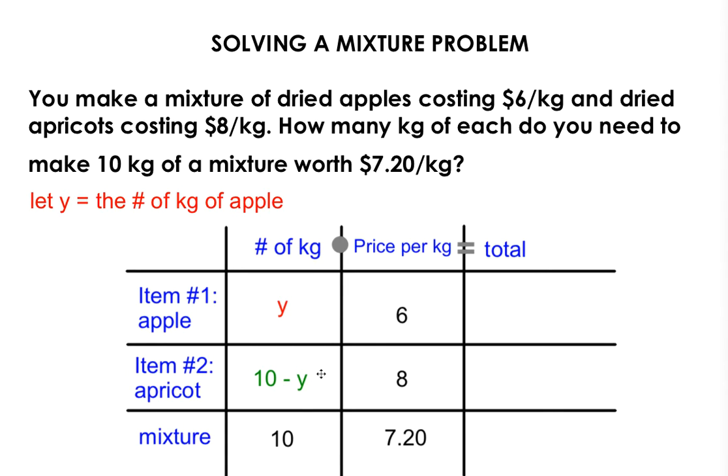Now that I have these two cells filled in, it's very easy to get your total column. It's the product of these two columns. Y times 6 is 6Y. The number always comes first before the variable when you're multiplying a number with a variable. In my second row here for the apricots, my total is 8 times the quantity of 10 minus Y.